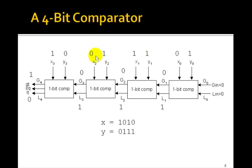Now x2 is less than y2, so l3 is going to be 1 because of that. And finally, x3 is greater than y3, 1 is greater than 0. So that's going to force g4 and therefore greater than to be 1. So that's how it works.